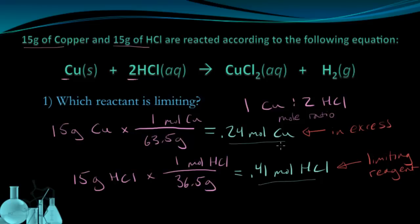I have more of it than I need. I won't be able to react all 0.24 moles of copper because I'm limited by the amount of hydrochloric acid that I have. And again, I know this because the mole ratio tells me that I need 0.48 moles of hydrochloric acid for 0.24 moles of copper. Now that I've identified HCl, hydrochloric acid, as being my limiting reagent, let's see what other kinds of questions I can answer.